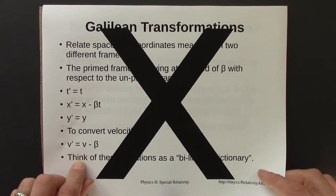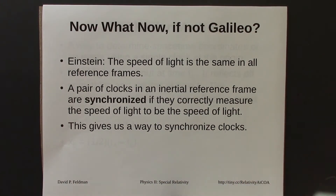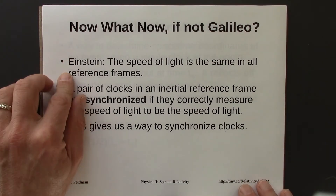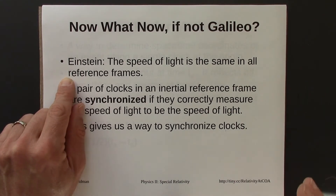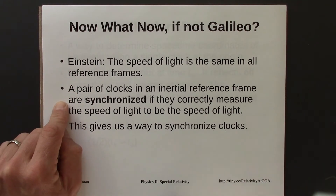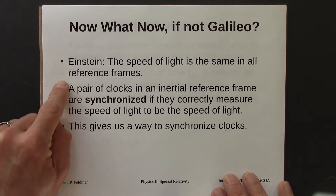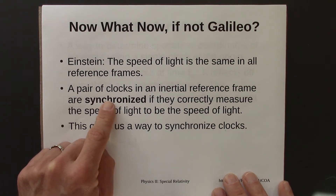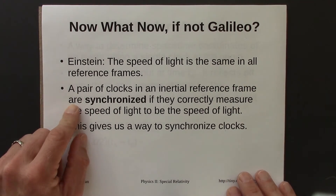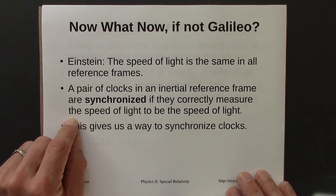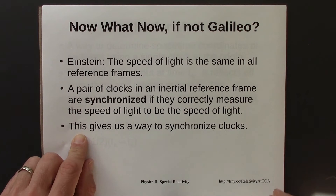The question is: what would we replace them with? Einstein says that Maxwell's equations tell us the speed of light is the same in all reference frames — that's what we know to be true. So let's use that to redefine time. We came up with a way of saying whether or not two clocks are synchronized: two clocks are synchronized in an inertial reference frame if they correctly measure the speed of light to be c. This gives us a way to synchronize clocks by sending light beams around.